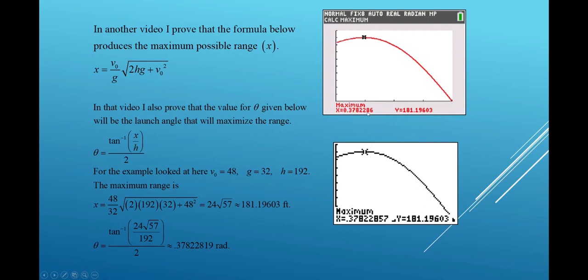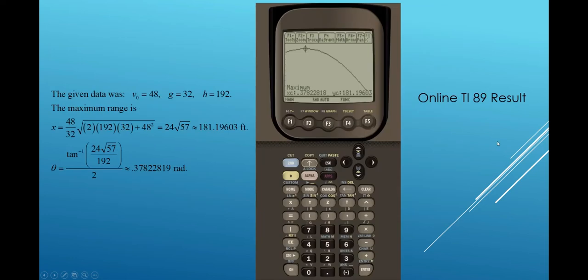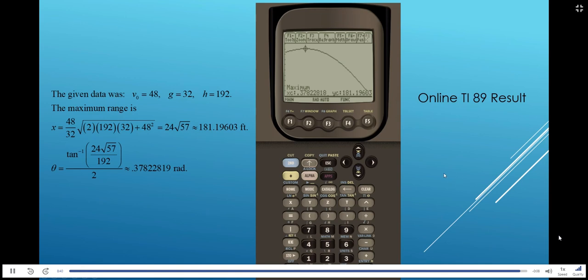And the exact launch angle that will maximize that range is this right here, which is about 0.37822819. After the 8, we had a bit of a discrepancy with the 19, keeping in mind that the graphing calculator is only an approximator. I actually used an online TI-89 to do it, and there I got the value to have an 18 here, so it's real close to the 19. With the same y-coordinate, which was the range x, matching up with the approximations from my formula.